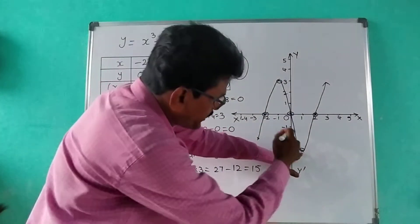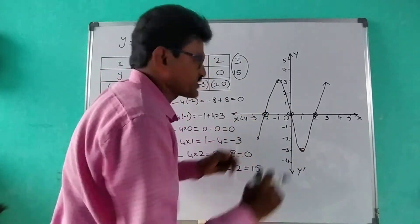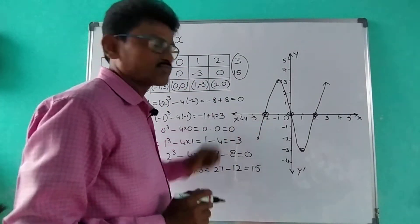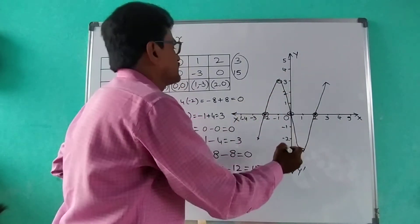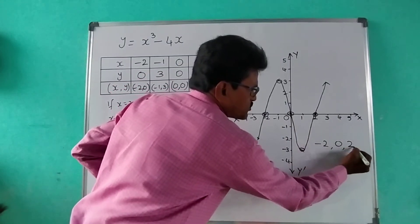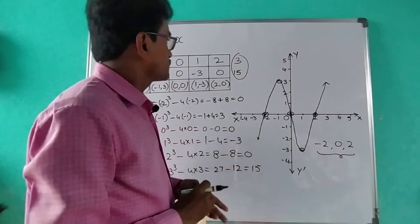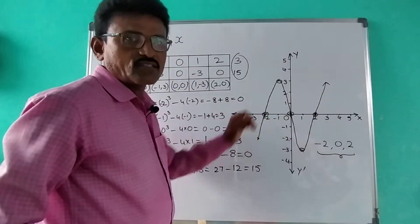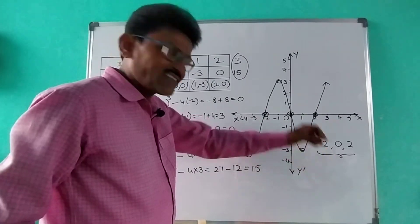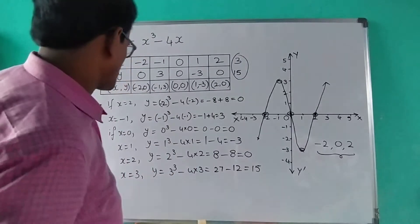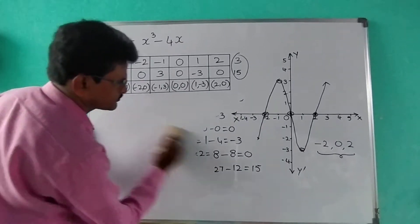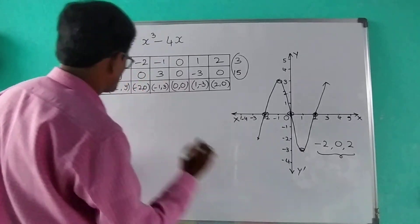At this point you have to turn here and here — don't come to the downside. This is the graph for y = x³ - 4x. Observe here: the curve is cutting at -2, 0, and +2. These are the zeros of this polynomial — the curve is cutting the x-axis at three distinct places. So we are getting three zeros.